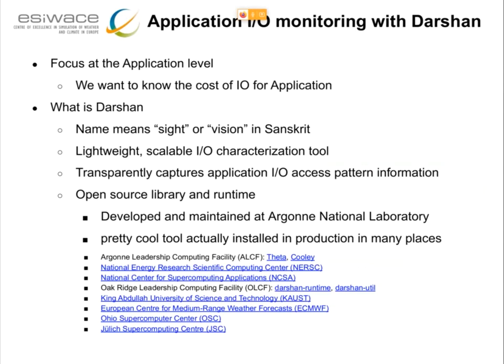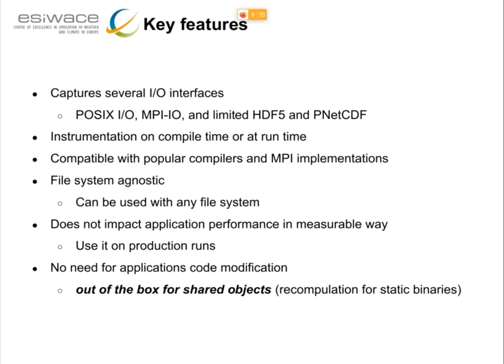Darshan is a pretty cool tool. The good thing is that there is the ability to observe the application without modifying the application itself, and in most cases you don't need to recompile or anything — it works out of the box. It has been deployed on several large HPC sites and used in production. People run it within the job scheduler and afterwards look at the performance report for the IO. It comes from one of the national labs in the US, Argonne. Since it comes from a national lab, there is a strong focus on HPC, including a large part focused on MPI-IO, and you can also observe HDF5 and other scientific-specific IO libraries.